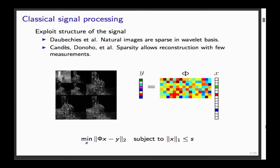The classical signal processing idea is to exploit the structure of the signal. In the 90s, Ingrid Daubechies and her collaborators realized that natural images are sparse in the wavelet basis. In the early 2000s, that was exploited to allow reconstruction of signals or images with very few measurements. The classic setup: you have a signal x that is sparse — very few non-zero entries — and you compress it by multiplying it by a random matrix.